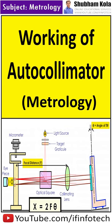The distance x is equal to 2f·theta, where f is the focal distance and theta is the angle of tilt. In this way, we can measure the angle of tilt with the help of a collimator.